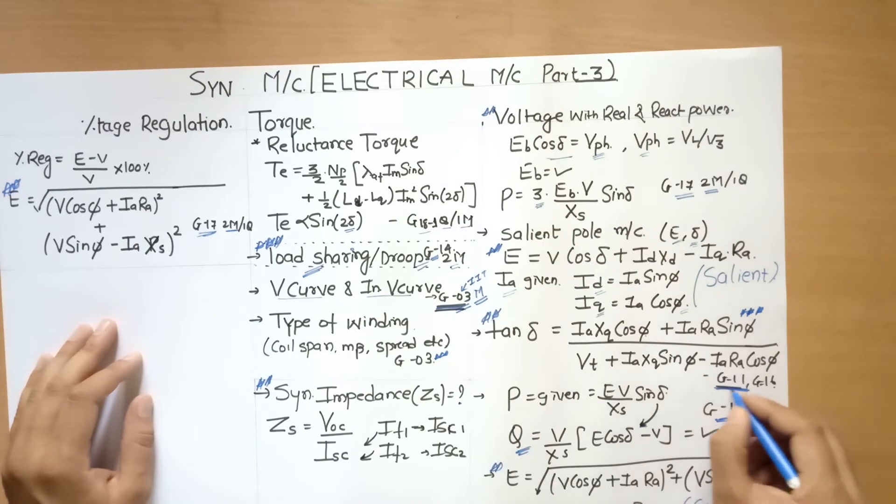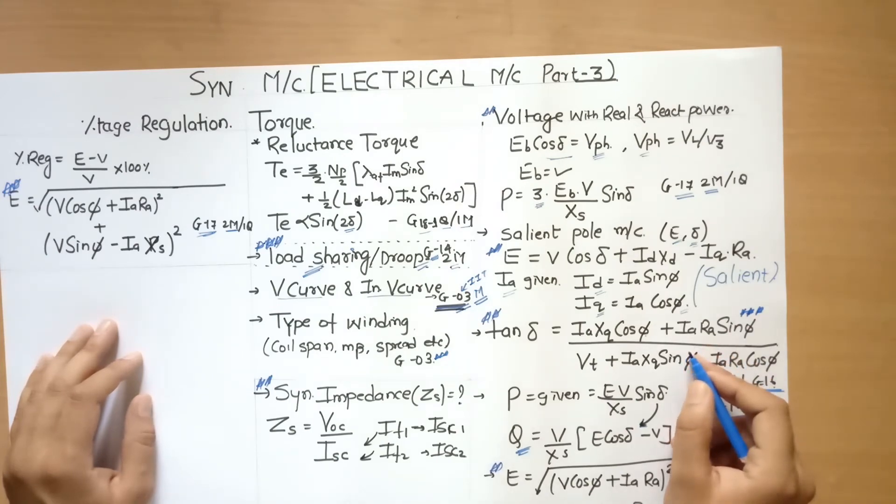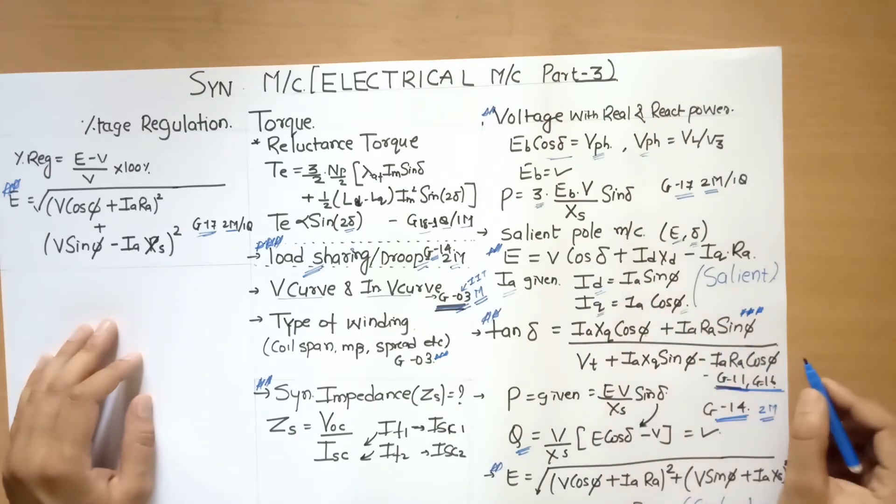This is another question. It was repeated. You see, this equation is repeated twice: gate 2011 and gate 2016. So I think this equation is very vital to remember, and many of the salient pole machine equations or numericals can be solved with the help of this equation.